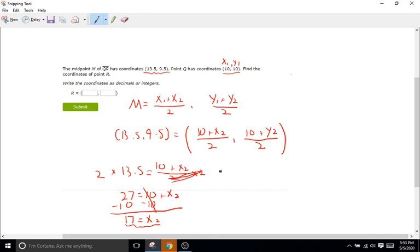Now let's do the Ys. So we'll do 9.5 equals 10 plus Y2 over 2. To get Y2 by itself, we've got to get rid of the 2. So multiply by 2, multiply by 2. These are going to cancel out. So 2 times 9.5 is going to be 19, which equals 10 plus Y2. We're going to subtract 10 from both sides to get Y2 by itself. 19 minus 10 is going to be 9, and then equals Y2.